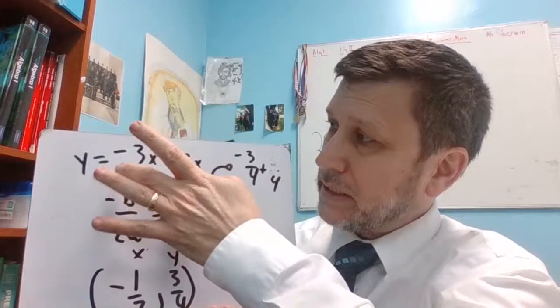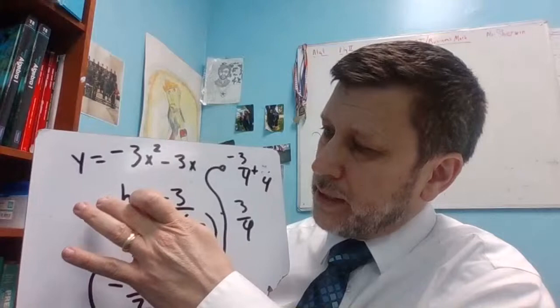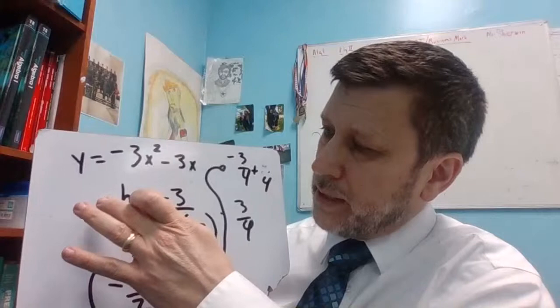This is the original equation, y equals negative 3x squared minus 3x. That's the original equation, and to find the axis of symmetry, it's negative b over 2a.